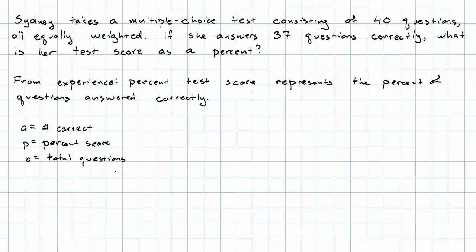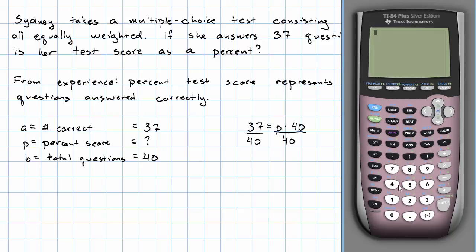Now that we see that, we can look back at the story and say that there were 37 correct, 40 total questions, and we want to know the percent score. This gives us the equation 37 equals our unknown percent times 40. To solve for the percent, we need to get rid of multiplication by 40, so we just divide, and we get 37 divided by 40 is 0.925.